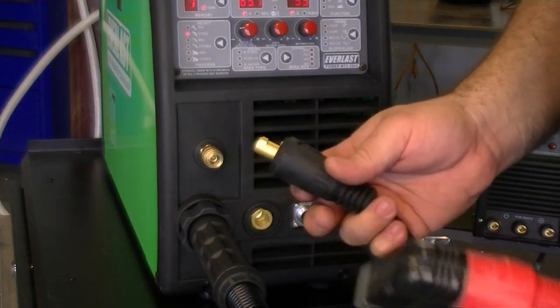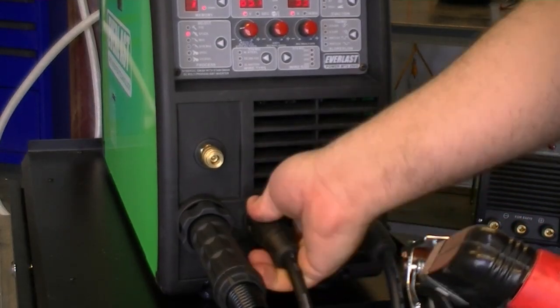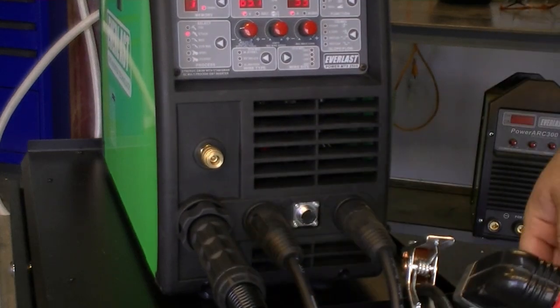To weld in TIG mode connect the torch to the positive connector. Again slide the connector in and twist about a quarter turn clockwise to secure it.